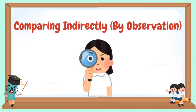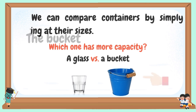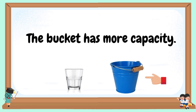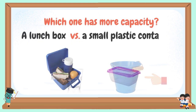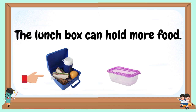Comparing indirectly or by observation: we can compare containers by simply looking at their sizes. Which one has greater or more capacity? A glass versus a bucket — the bucket has more capacity. Which one has more capacity? A lunchbox versus a small plastic container — the lunchbox can hold more food.